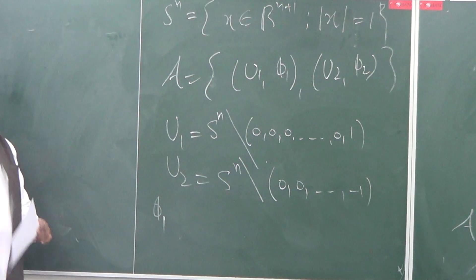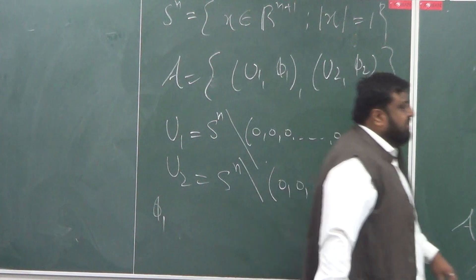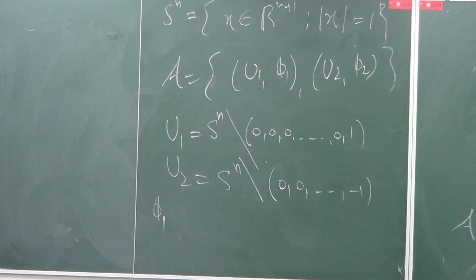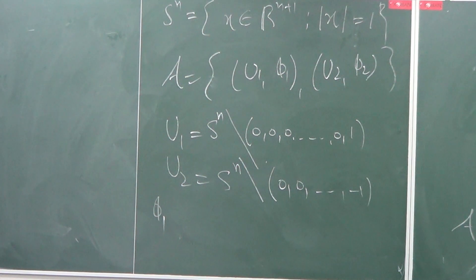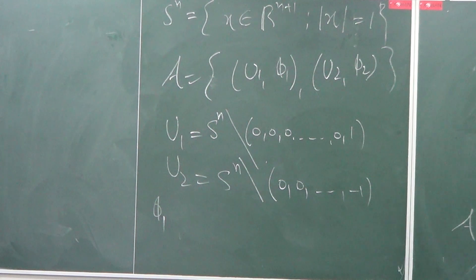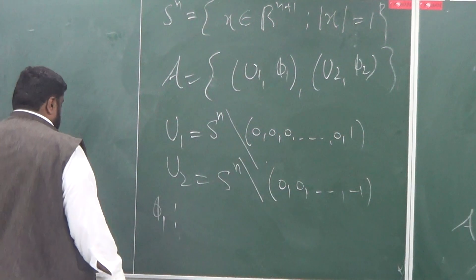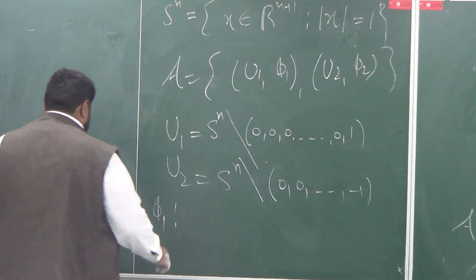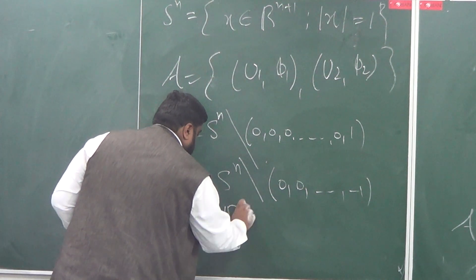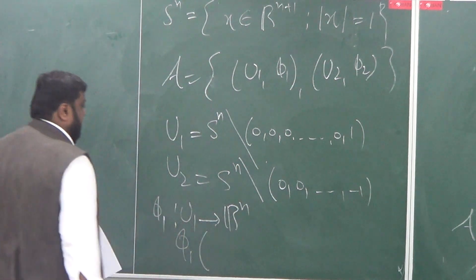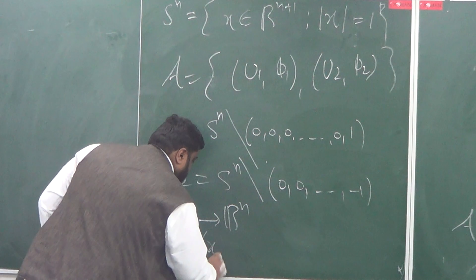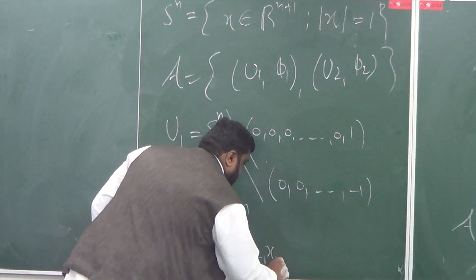Let me define a map φ1. I want to take a point from the sphere and throw it onto the line — in case of three dimensions, onto the xy-plane. So φ1 is a map from U1 into R^n, and it is defined as: φ1 takes a point (x1, x2, ..., x_{n+1}).